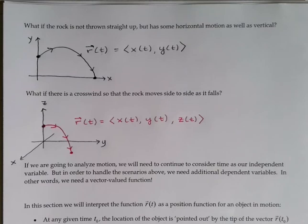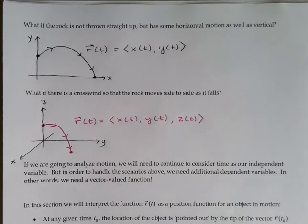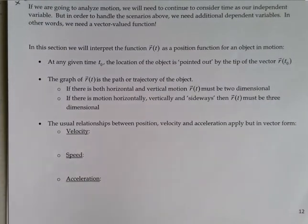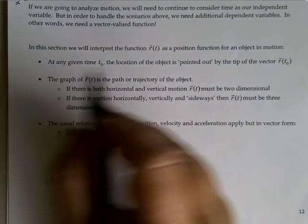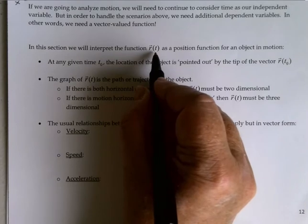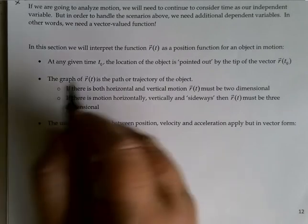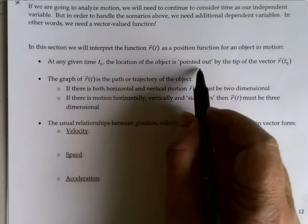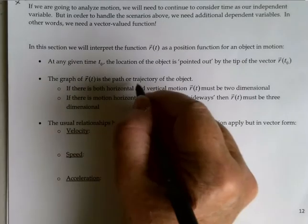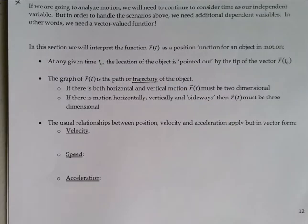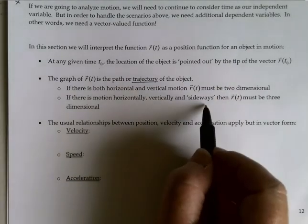We'll be looking at examples of both two- and three-dimensional ones, starting with 2D. To do this, we're going to develop some general vector-valued functions that we can use so we don't have to start from scratch every time. In this section, we interpret r of t as the position function for an object in motion — r of t tells me the x, y, and possibly z components, the location of my object. The graph of r of t is the actual path, what we call the trajectory. Horizontal and vertical motion we can do in two dimensions; if there's also sideways motion, we need three.